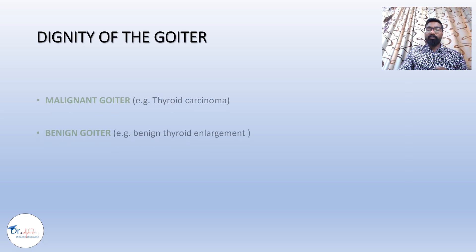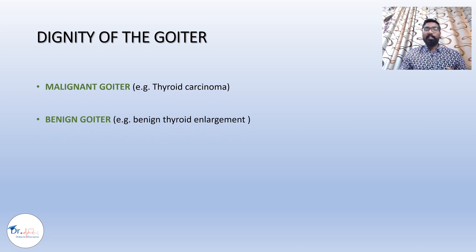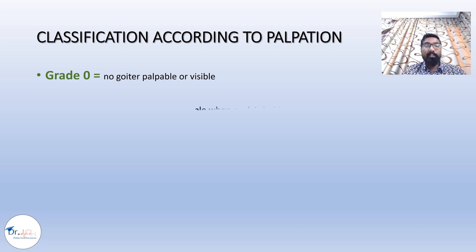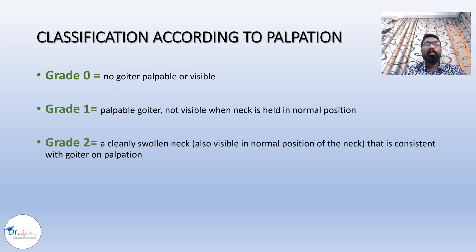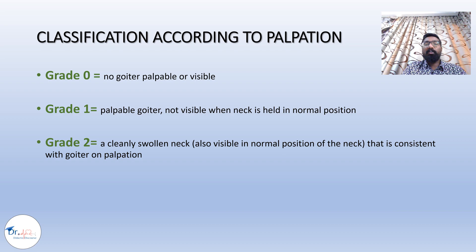The third classification is based on dignity: malignant goiter (e.g., thyroid carcinoma) and benign goiter (e.g., benign thyroid enlargement). The fourth classification is based on palpation — three grades: Grade 0, goiter is not palpable or visible on clinical examination. Grade 1, goiter is palpable but not visible when the neck is in a normal position. Grade 2, a clearly swollen neck is visible even in the normal neck position.